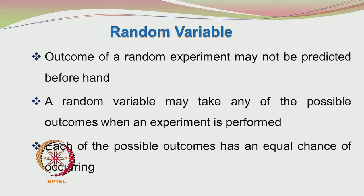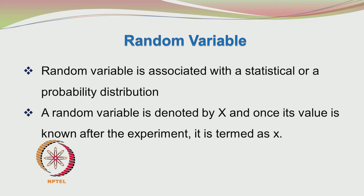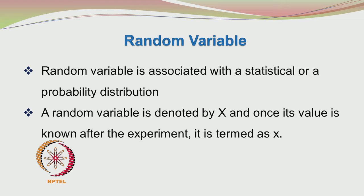What are the characteristic features of a random variable? The outcome of a random experiment may not be predicted beforehand. A random variable may take any of the possible outcomes when an experiment is performed, and each of the possible outcomes has an equal chance of occurring. The random variable is associated with a statistical or probability distribution. The random variable can take a discrete value or it can have a range of continuously varying values.